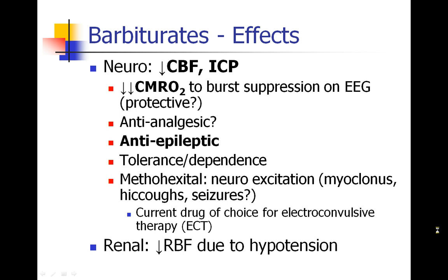In the brain, like most IV induction agents, barbiturates decrease cerebral blood flow and intracranial pressure. They decrease cerebral metabolic rate of oxygen quite significantly — so much so that you can achieve burst suppression on EEG, which is nearly a flatline. Some think this may be protective in cases of brain ischemia. The drugs may be anti-analgesic, contributing to increased pain, but are definitely anti-epileptic and will stop a seizure. Patients can become tolerant and dependent with multiple exposures. Methohexital specifically can show neuroexcitation — myoclonus, hiccups, or even seizures.